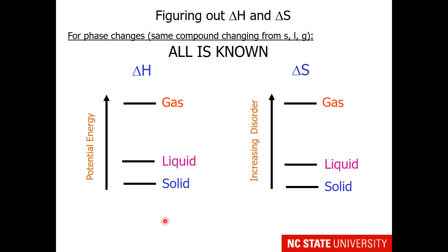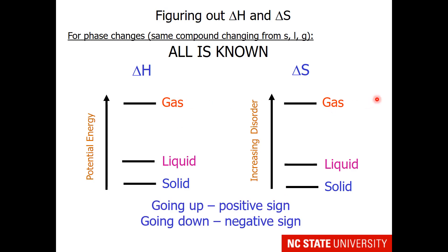For phase changes, don't forget your lovely potential energy and disorder diagrams, which have solid low and gas at a high level. Going up, both delta H and delta S are positive. Going down, both are negative.